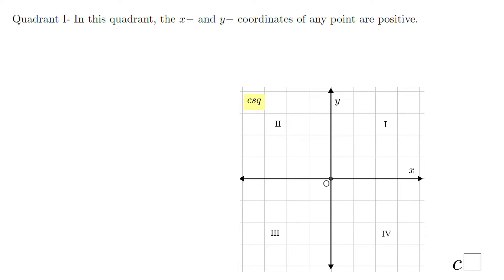Also, these two axes — x-axis and y-axis — divide the rectangular grid into four quadrants. Quadrant one is where the x- and y-coordinates are both positive.